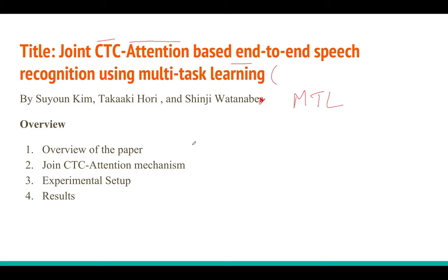We will see how this multi-task learning approach, where the losses are CTC loss and attention loss, improved the accuracy of speech recognition systems trained with CTC alone or attention alone. The whole idea is to improve accuracy over the state-of-the-art at that time, which was the attention-based sequence-to-sequence model, also known as the Listen, Attend and Spell model.